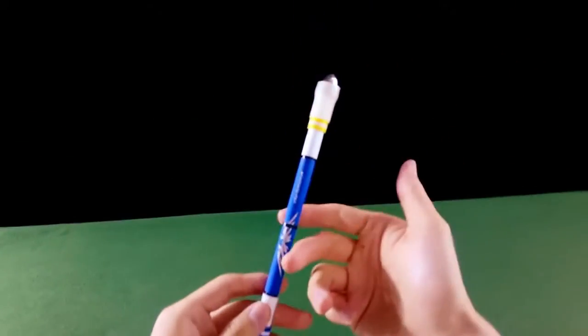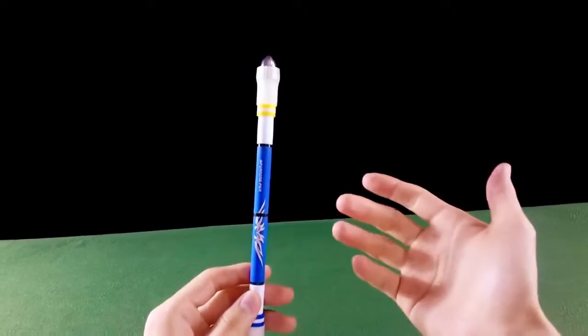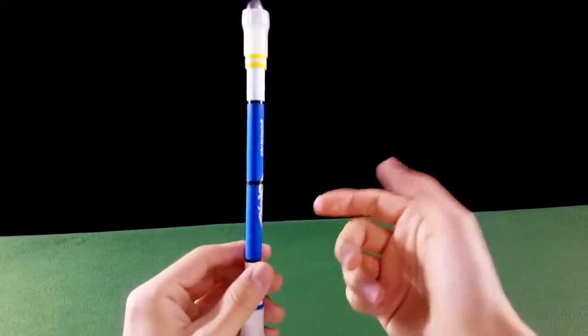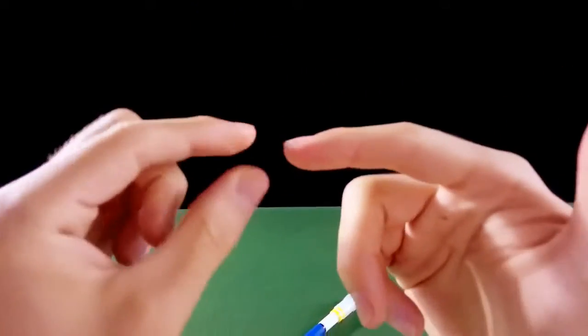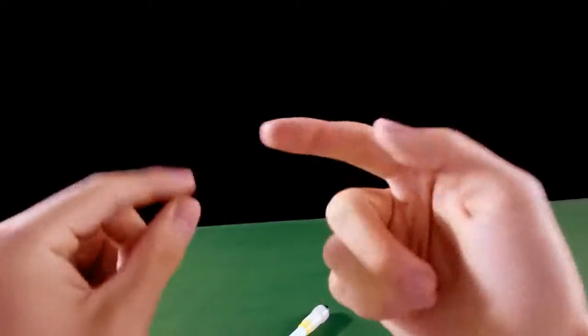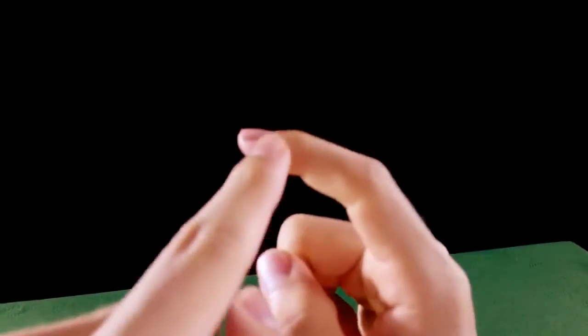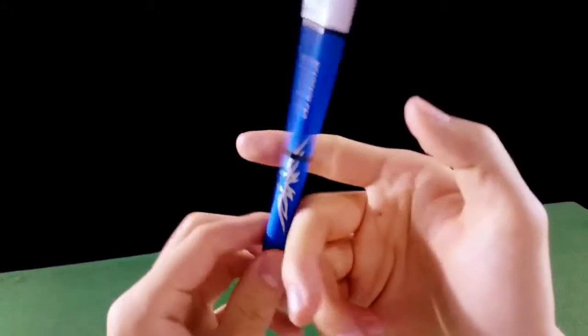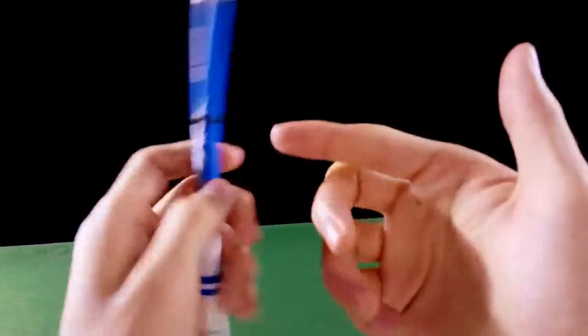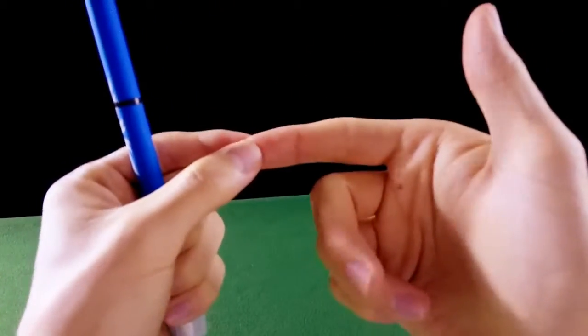It ends up locking. For example, I had this problem and a solution for this problem is to try to spin the pen on the distal phalanges. On the distal phalange. This here is the medial phalange and this here is the distal phalange.